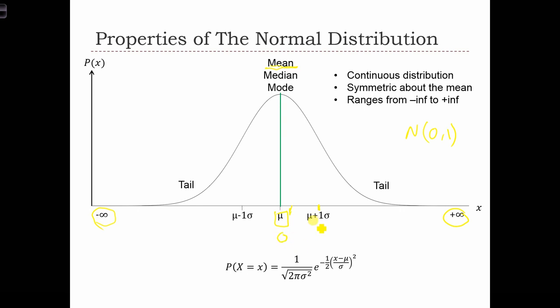And over here, we've got mu plus 1 sigma, 0 plus 1 sigma. So we've got the value 1. In this case, sigma squared is 1, and therefore, sigma equals 1 as well.